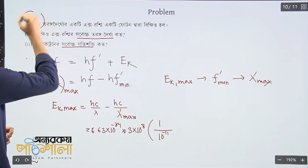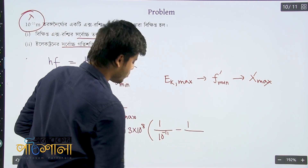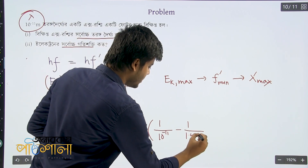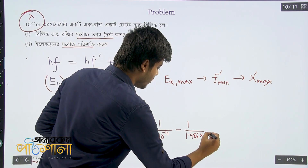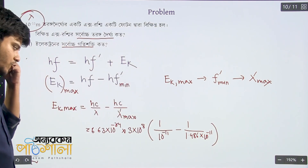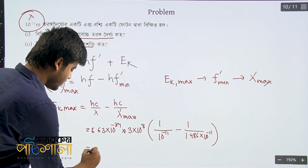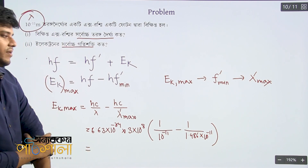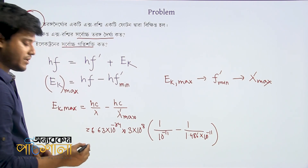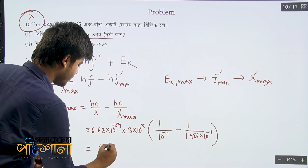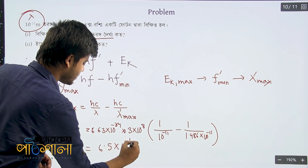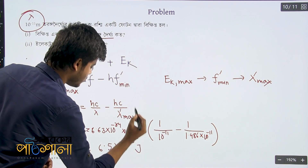The photon's scattered wave question: minus lambda prime. We take 1.486 into 10 to the power minus 11 meter. Using the calculator, our result is 6.5 into 10 to the power minus 15 joule.